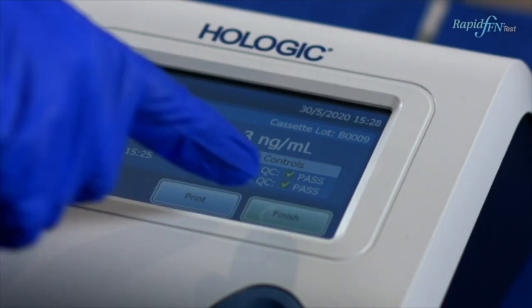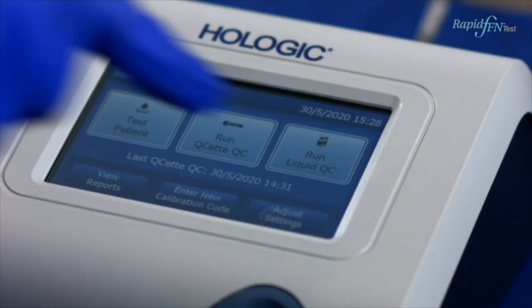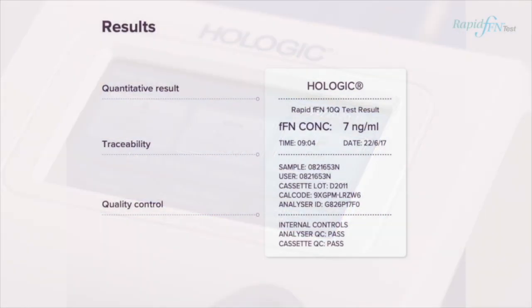With less than 10 minutes analysis, you will receive a results label which details your quality control, traceability such as user ID and patient number, and your quantitative fetal fibronectin result in nanograms per milliliter. Please refer to your local protocol regarding the management of your patient.